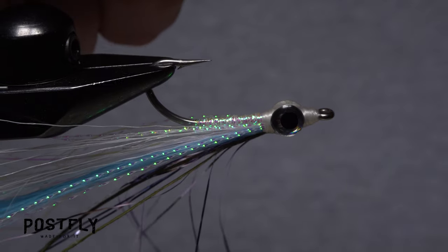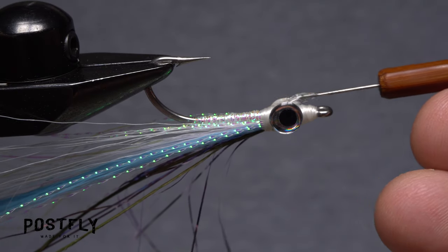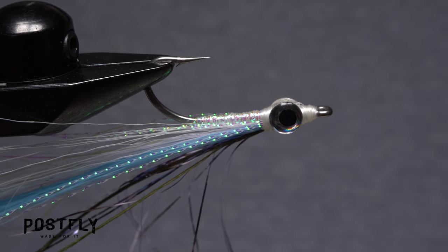You can then flip the fly over and repeat the process on the underside of the fly to firmly anchor the bottom edges of the eyes. After an ample bath of UV light, both eyes should be permanently affixed to the fly.